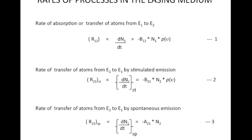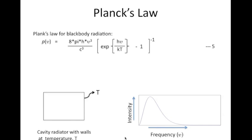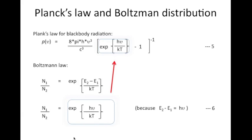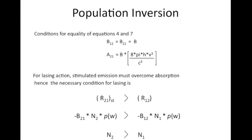We are familiar with the rate equations for the three processes just mentioned. We also know how to use these rate equations to come up with an expression for the energy density ρν under the conditions of thermal equilibrium, and how to utilize Planck's law and Boltzmann statistics to come up with a relationship between the Einstein constants. Here are the equations that relate the Einstein constants.